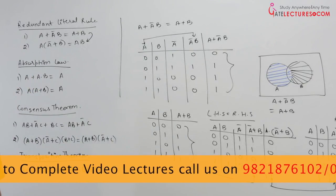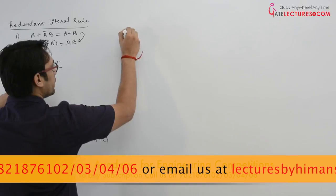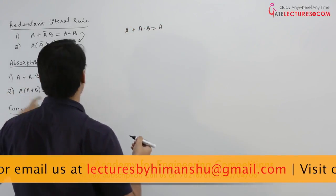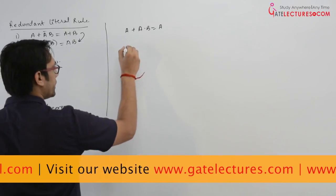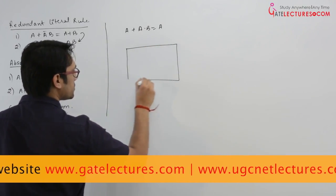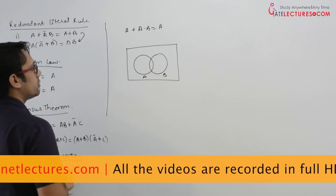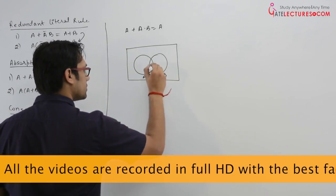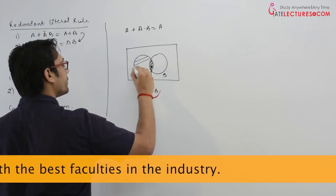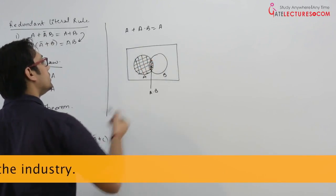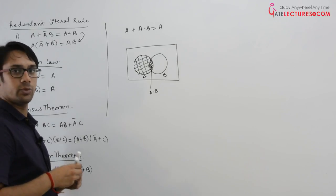Now let us try to prove the absorption law. The absorption law says if we have A plus A dot B, it can be written as A. Let us draw a Venn diagram. Assume this is the universe, A is one circle, B is another. A dot B is the intersection region. A plus A dot B means selecting the complete A plus that intersection region, which just covers the complete A. So A plus AB equals A.